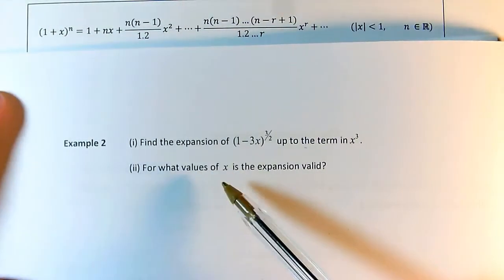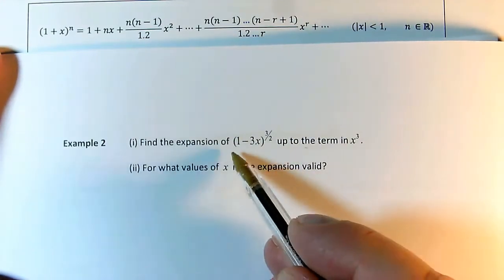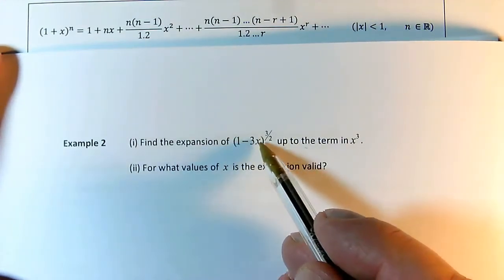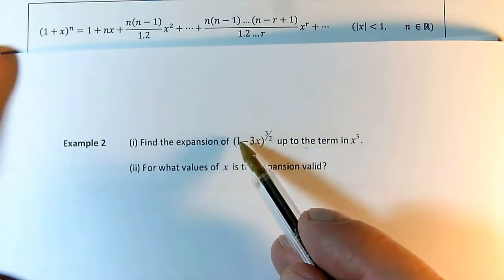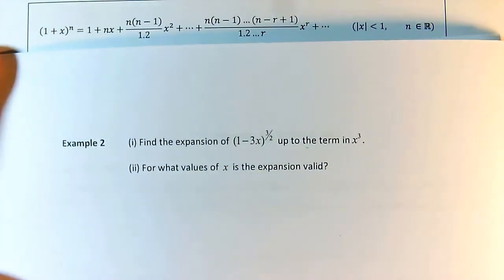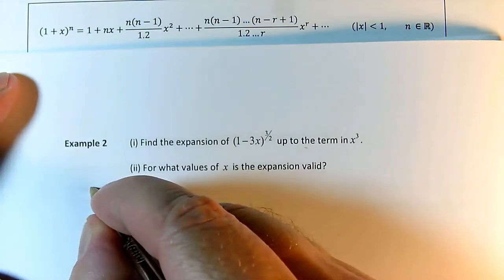Okay, second tier example on the binomial. I'm still using this expansion. I've still got a 1 here, so that's the important thing. This bracket has got to start with 1. I'm not too bothered this isn't an x. So minus 3x is just acting like that plus x there. Okay, so now I really am going to have to use brackets, but otherwise it's just going to be a direct application of the formula.